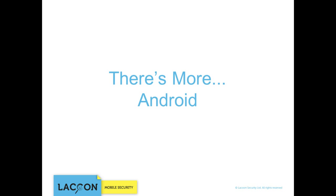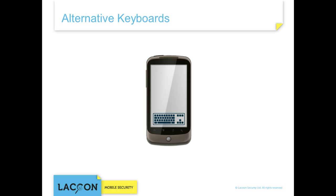On Android, there are other means of breaking the secure container without rooting the device. Android allows the installation of alternative keyboards, as well as applications that take screenshots. An attacker can embed malicious code into these applications, turning them into actual key logging and screen capturing software. Consequently, any text which the user enters into the secure container, such as emails and documents, is exposed to the attacker.